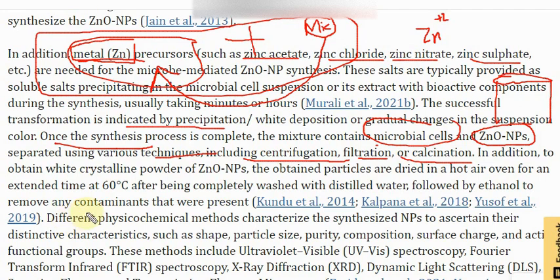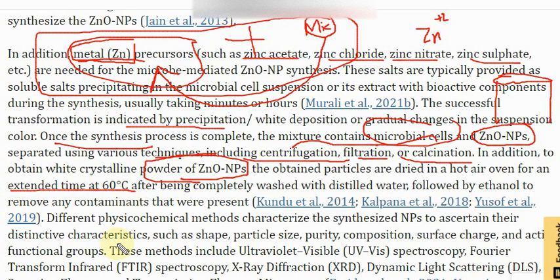To obtain white crystalline zinc oxide powder, once the nanoparticles are separated by centrifugation or filtration, you dry them in a hot air oven for an extended time at 60 degrees Celsius after being completely washed with distilled water. Ethanol is then used to remove any contamination present in the particles. Ethanol is an organic compound helpful for removing contamination, and since zinc oxide is stable and neutral it does not react with ethanol.